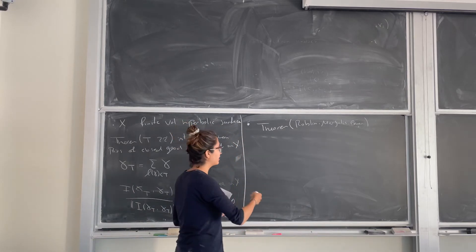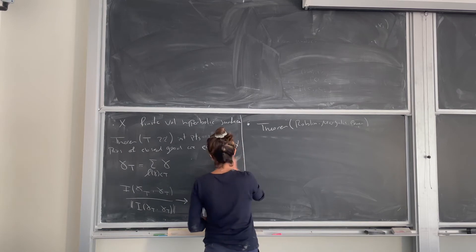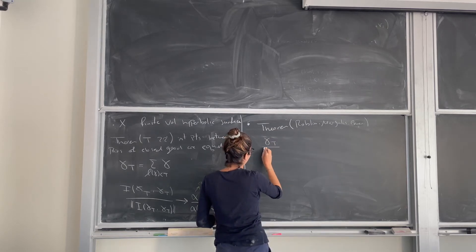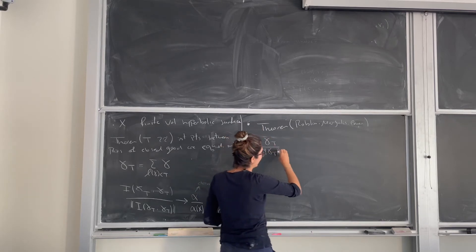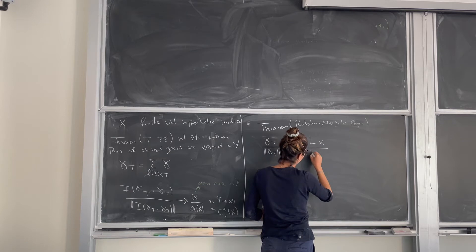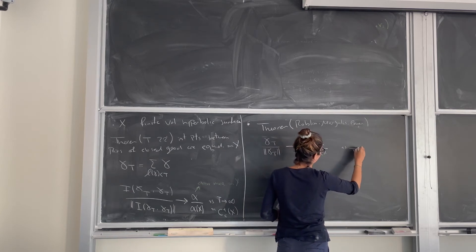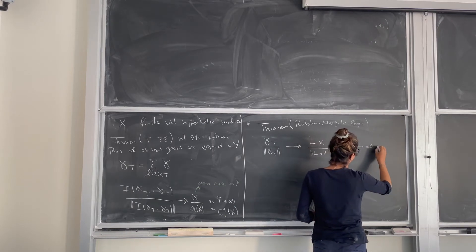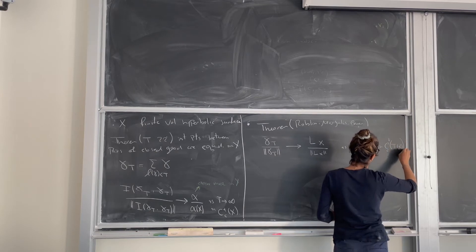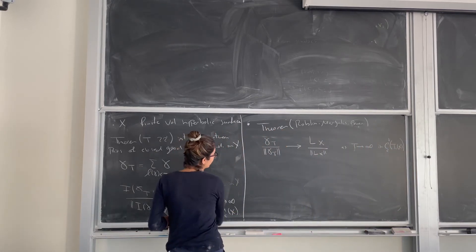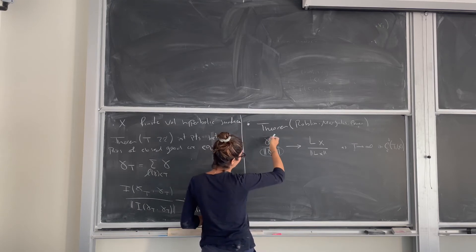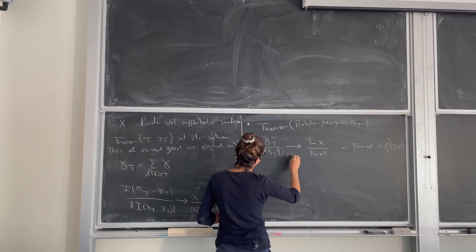This theorem says that closed geodesics are equidistributed on a surface. In other words, if we consider gamma_t — the closed geodesics up to length t — normalize it by its length as a measure on the unit tangent bundle, then it converges to the uniform measure on the unit tangent bundle, which is L_x, as t goes to infinity, in the dual of continuous compactly supported functions on the unit tangent bundle. The norm of this measure is just the length of gamma_t.